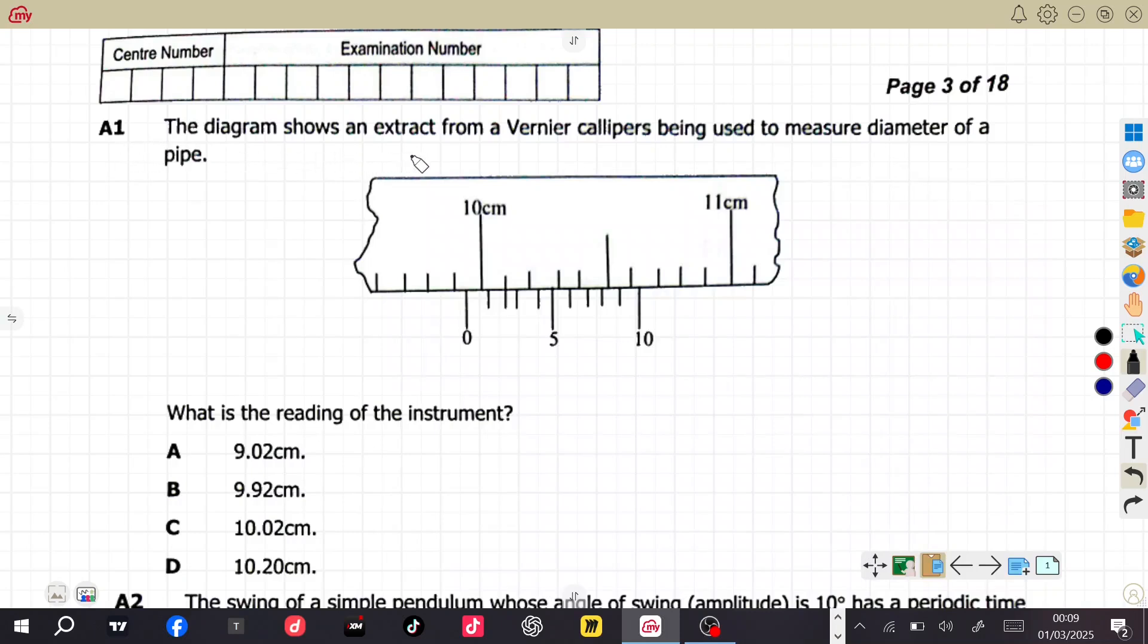A1, the diagram shows an extract from a Vernier calipers being used to measure diameter of a pipe. This diagram here is just an extract. What do they mean when they say an extract? Meaning that it is a part which they took from a bigger part, which is the Vernier caliper itself. They decided to take only this part they are showing you here. Then the question says, what is the reading of the instrument?